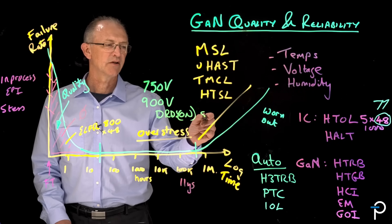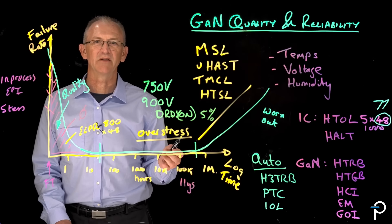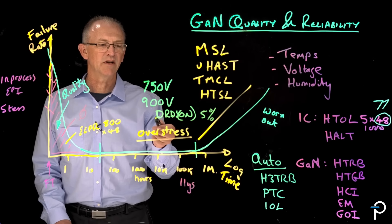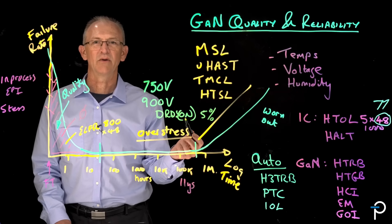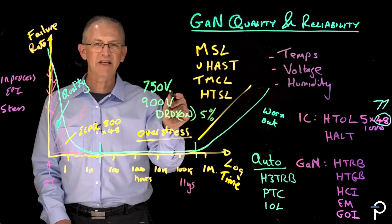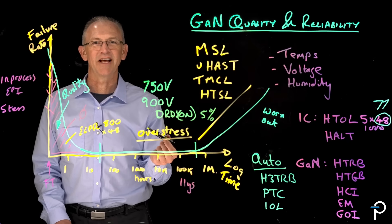And it turns out, somewhat arbitrarily, that we've chosen 5% as being the limit that we can accept an increase in RDS-ON. And that is how we choose the BV of our GaN devices.